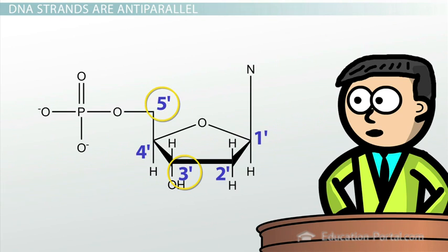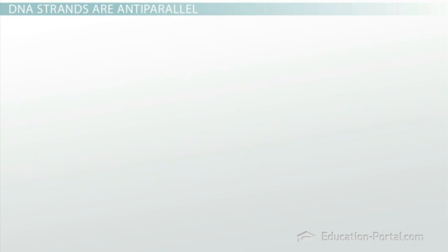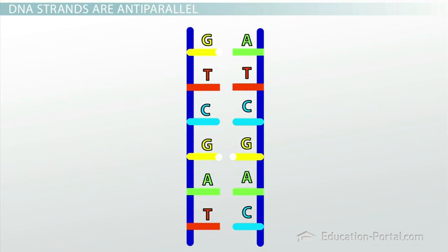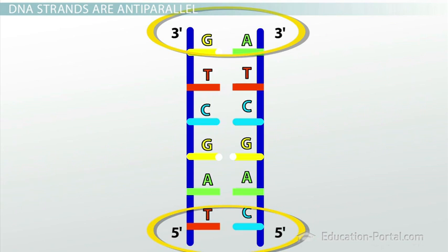Remember that complementary base pairing works like a lock and key, so there's only one orientation in which hydrogen bonding will work. If you try to orient the two strands parallel to each other, the sugar end of the polynucleotides are both at one end, and the phosphate groups are at the other end. However, the nitrogenous bases can't hydrogen bond in this orientation. The key can't fit into the lock.